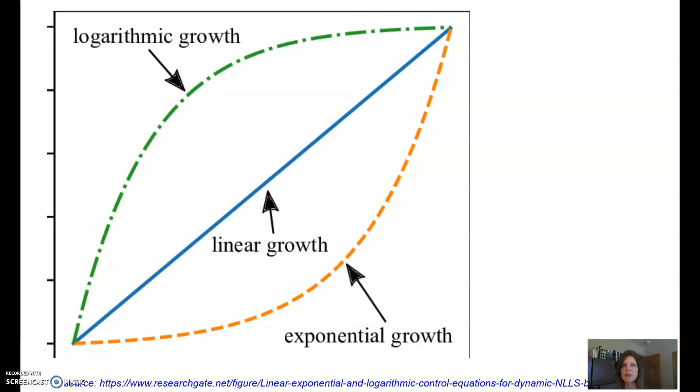For instance, you might be growing by 100 people every month or two rabbits every day. Whatever the case is, there is a constant amount of growth over time.